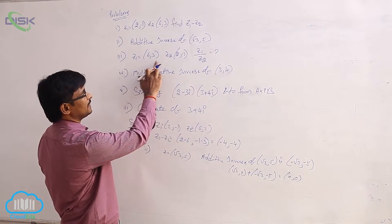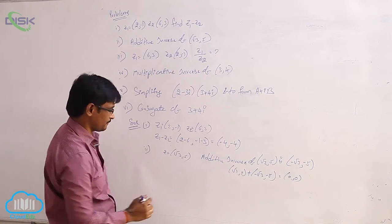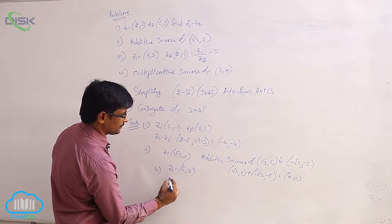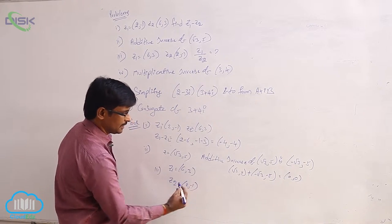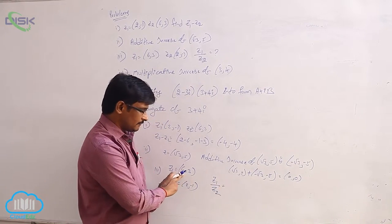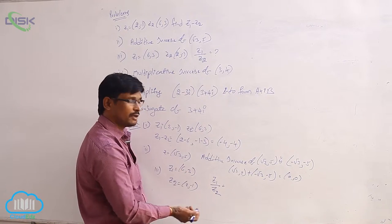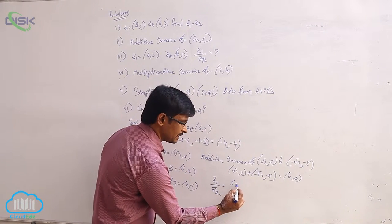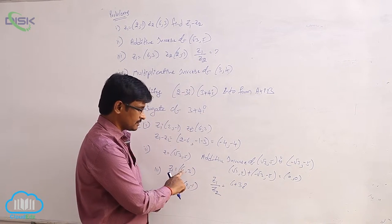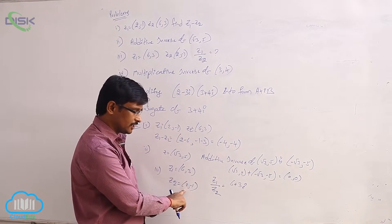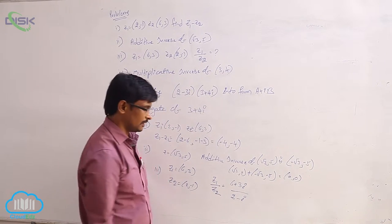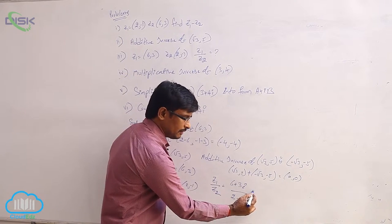Next, they give z1 and z2 and ask to find z1 by z2. Here z1 is (6, 3) and z2 is (2, −1). Write in the form a + bi: z1 is 6 + 3i and z2 is 2 − i.